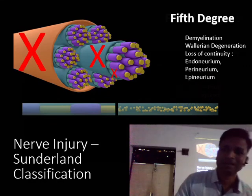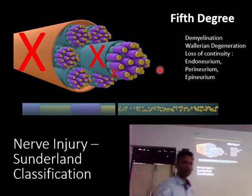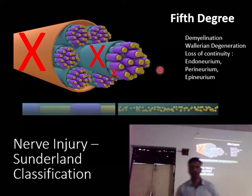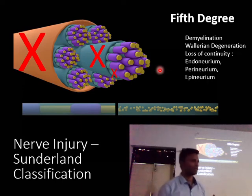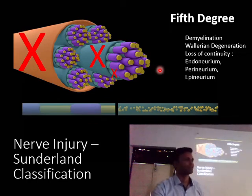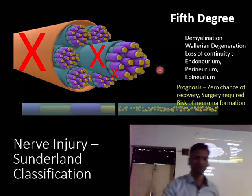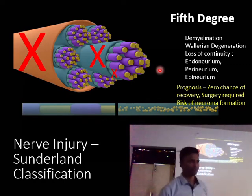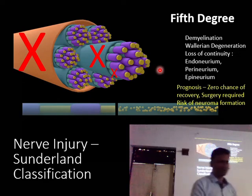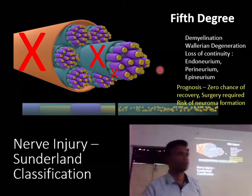In Sunderland's fifth degree, the last structure — the epineurium — is also lost. So we have demyelination, Wallerian degeneration, and loss of continuity of endoneurium, perineurium, and epineurium. There is zero chance of recovery without microsurgery, and even after microsurgery full recovery is not expected. If left unsutured, the regenerating axon has no guide and there is a risk of neuroma formation.